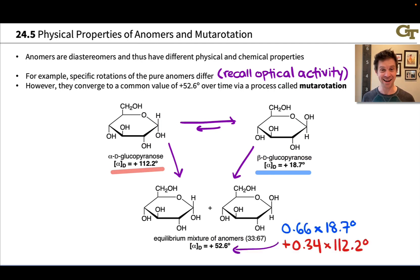And notice that if we take 0.66, the fraction due to the beta anomer, and multiply it by its specific rotation, 18.7 degrees, and 0.34 and multiply it by the specific rotation of the pure alpha anomer, the sum of those two is equal to 52.6. So the evidence for this 33 to 67 or 34 to 66 ratio is this observed specific rotation that is sort of a weighted average of the two anomers that we observe at equilibrium.